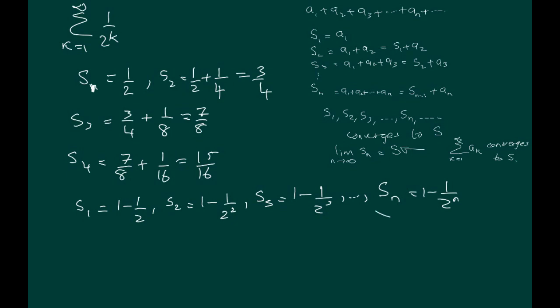Now once I have the nth term, 1 minus 1 over 2 to the n, I can calculate the limit as n goes to infinity of 1 minus 1 over 2^n. As n goes to infinity, that clearly goes to 1, which means that the series sum from k equals 1 to infinity of 1 over 2^k is equal to 1, and it is a convergent series. It converges to 1.